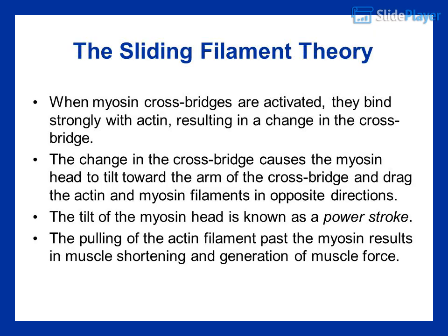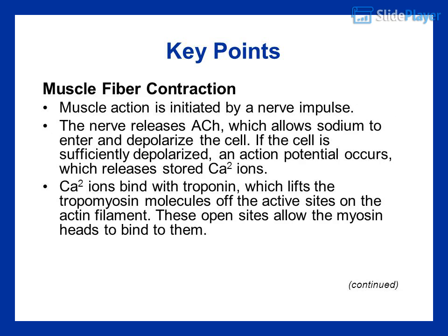The sliding filament theory: when myosin cross-bridges are activated, they bind strongly with actin, resulting in a change in the cross-bridge. This change causes the myosin head to tilt toward the arm of the cross-bridge and drag the actin and myosin filaments in opposite directions. The tilt of the myosin head is known as a power stroke. The pulling of the actin filament past the myosin results in muscle shortening and generation of muscle force.